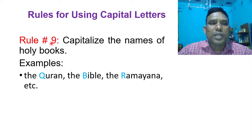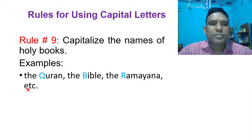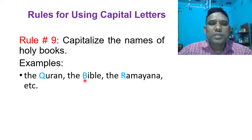Rule number 9: Capitalize the names of holy books. For example, the Quran, the Bible, the Ramayana, etc. The first letter Q in Quran is capitalized, the first letter B in Bible is capitalized, and the first letter R in Ramayana is capitalized.